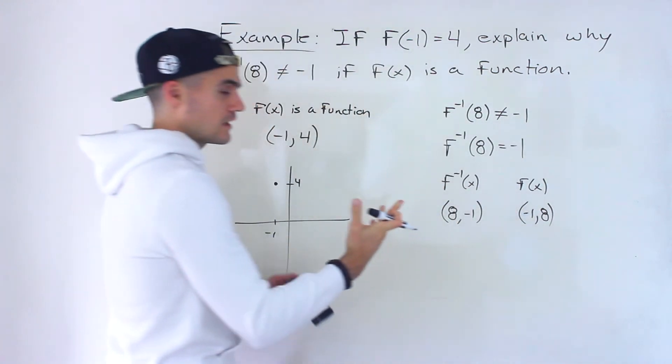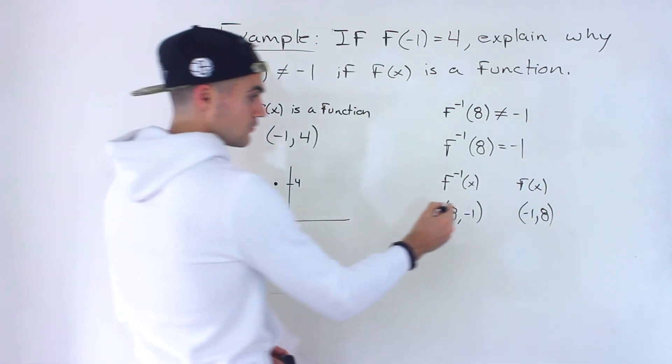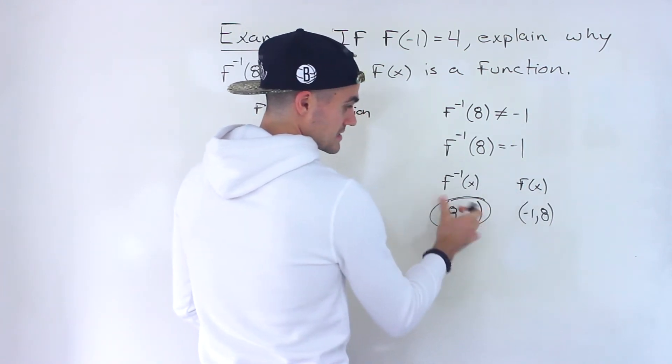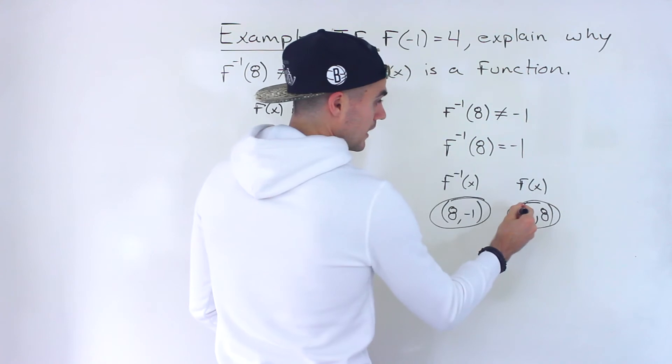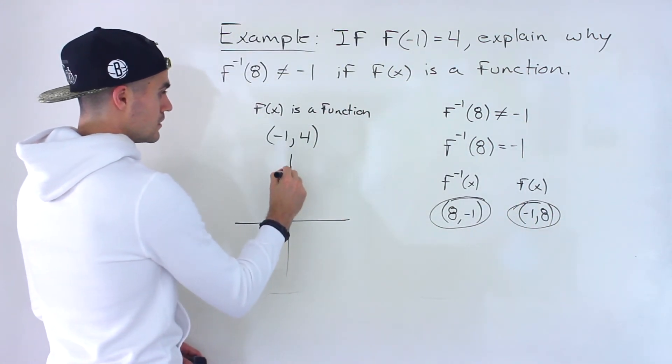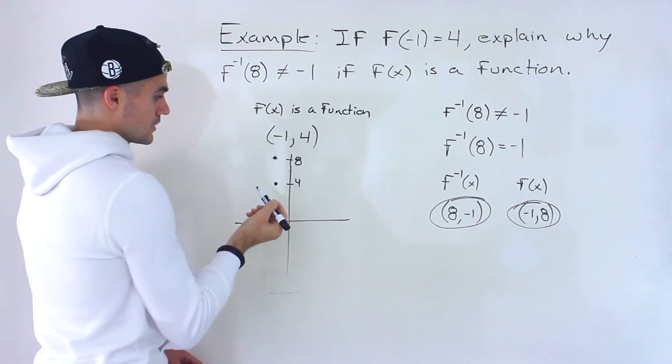Remember the inverse is just the function interchanged. So if the inverse has this coordinate, then the function just has this coordinate interchanged: negative 1 and 8. But notice that negative 1 and 8 would be up here. This is not to scale but just want to show it visually.